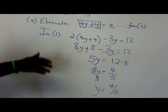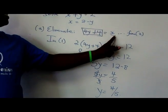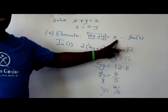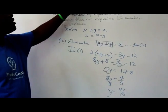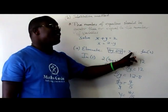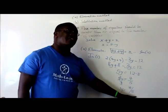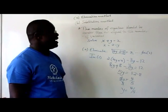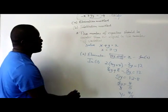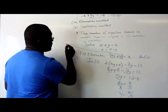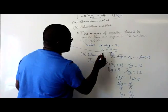So what we've done is we made x the subject of the formula in equation 2, then we substituted the value of x in equation 1, and we used that to get the value of y. Now that we know the value of y, we can use this relationship where we made x the subject.